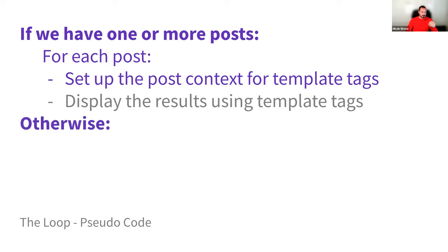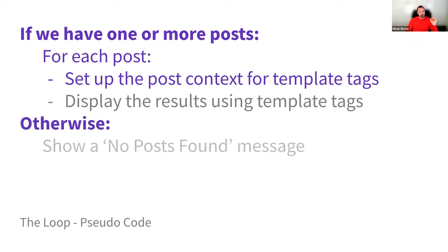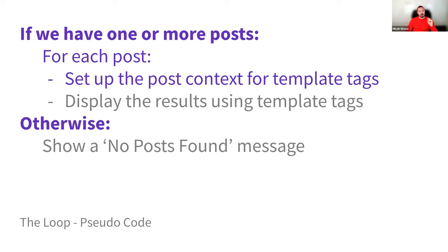If we don't have posts — that's our 'otherwise' — we'll show a no-posts-found message. Everything in purple is what we consider part of the WordPress loop, and everything grayed out is something that may change completely based on the theme or context. The logic is: if we have posts, for each post set up the post, otherwise do something else. Depending on the type of loop, because there are multiple types, there may need to be some sort of reset that happens as well.